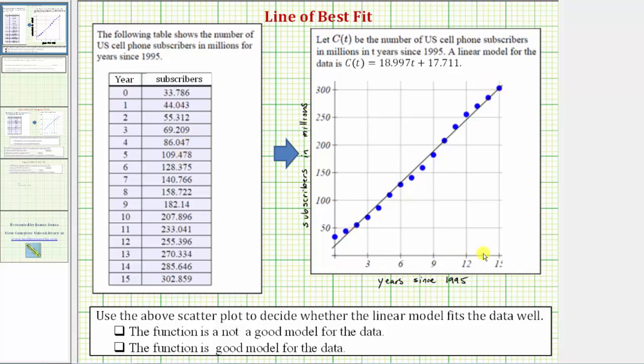The horizontal axis gives the number of years since 1995, and the vertical axis gives the number of subscribers in millions. Each ordered pair from the table corresponds to one point on the coordinate plane to form the scatter plot.